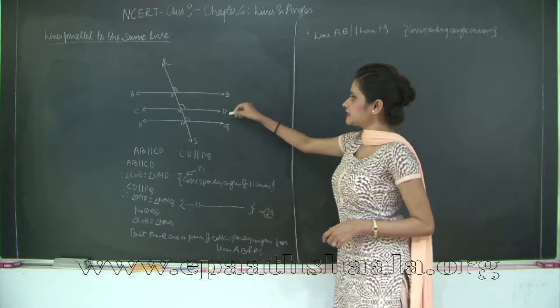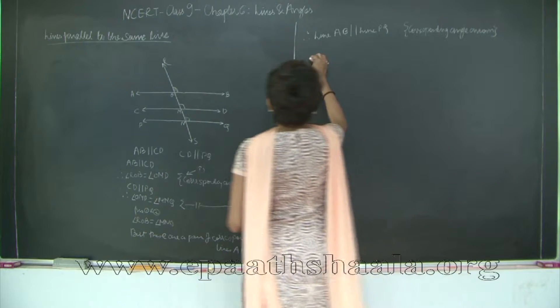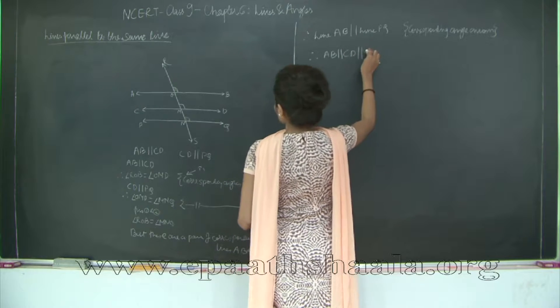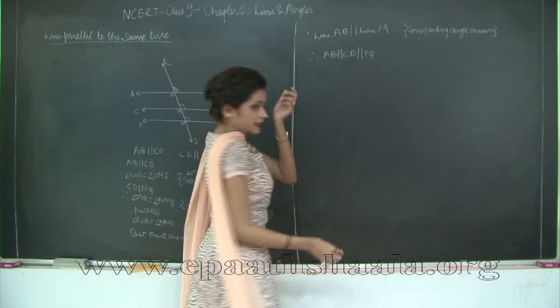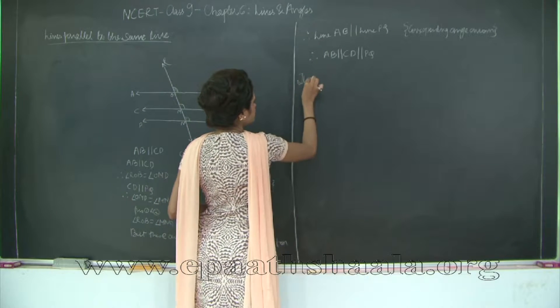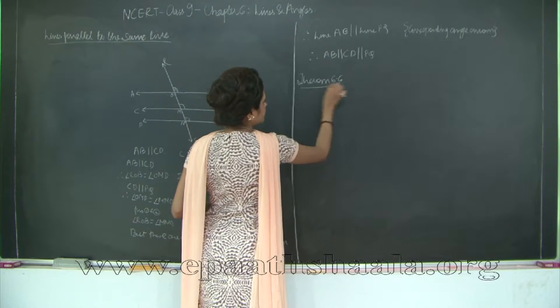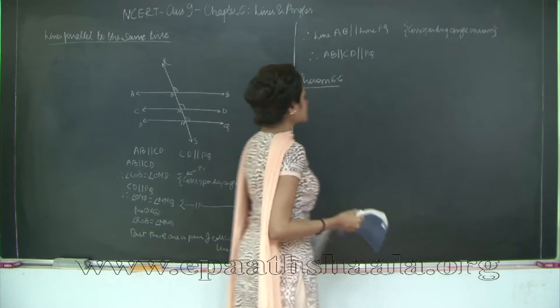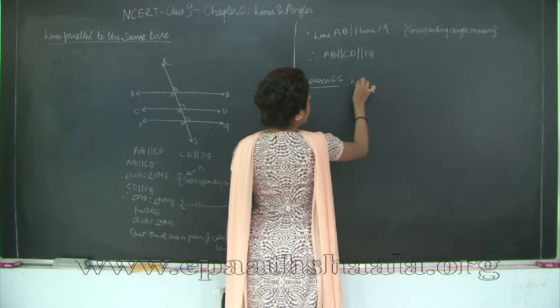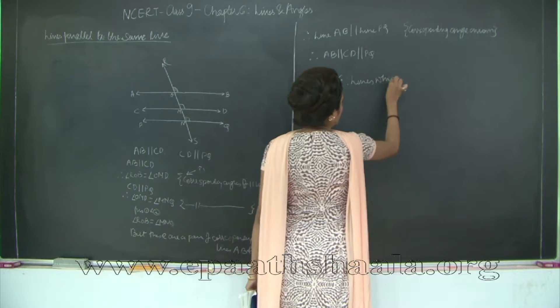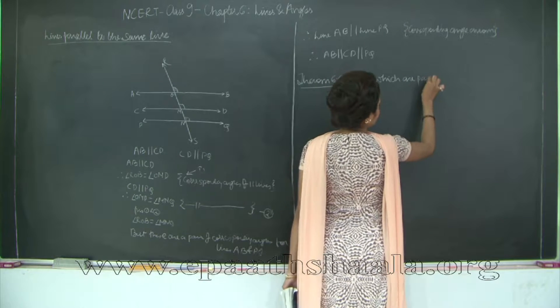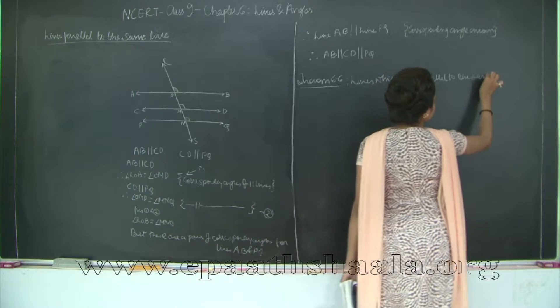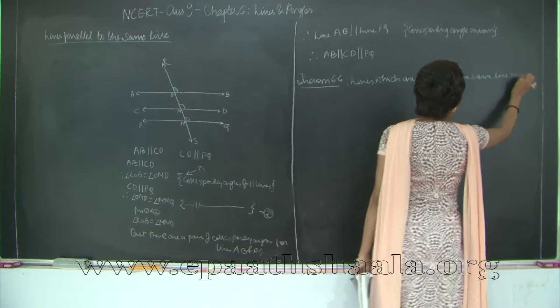Therefore, line AB, CD and PQ are parallel to each other. Therefore AB is parallel to CD which is parallel to PQ. And therefore for this we have a theorem. Theorem 6.6, which states that lines which are parallel to the same line are parallel to each other.